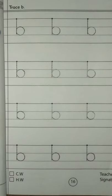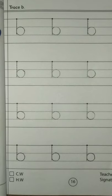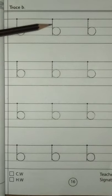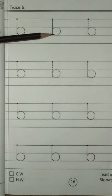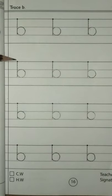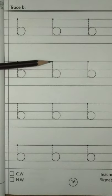Start from the dot. Trace and write B. Everyone listen very carefully. Start from the dot. Trace and write B. Very good. Very nice. Nicely done. Now trace the sound B.